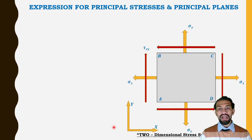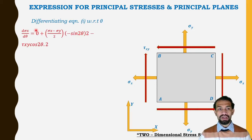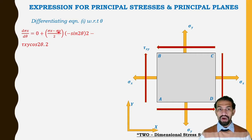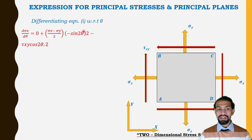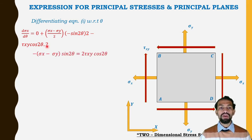Differentiating Equation 1 with respect to θ: the constant term (σx + σy)/2 becomes zero, and the derivative gives dσx/dθ = −(σx − σy)/2 · sin2θ · 2 − τxy · cos2θ · 2, which simplifies after the factor of 2 cancels.